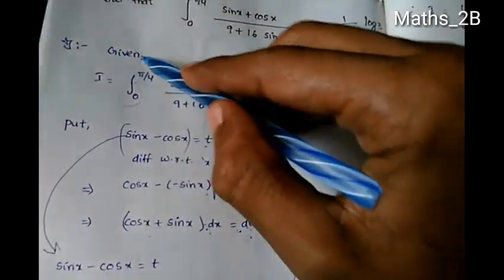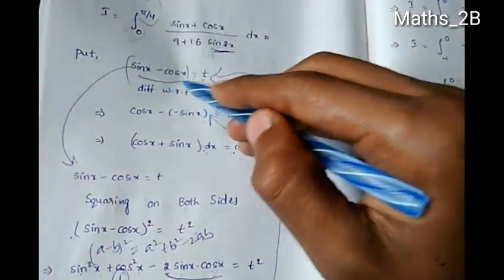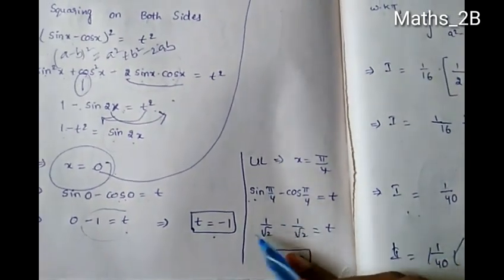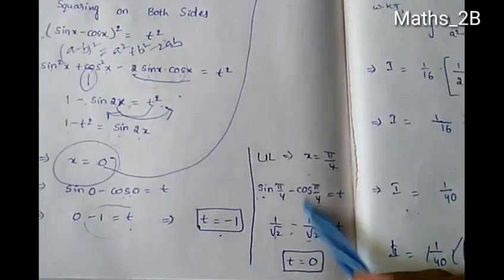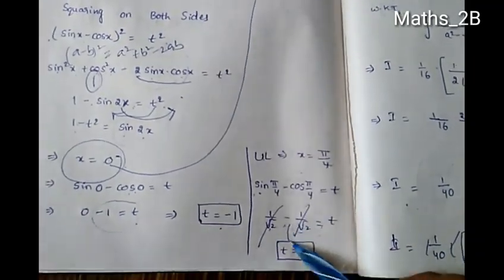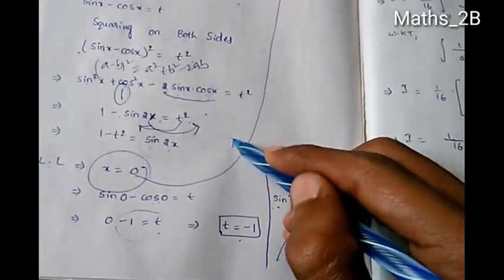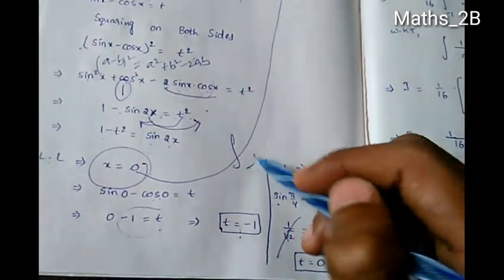For the upper limit, when x = π/4, sin(π/4) - cos(π/4) = 1/√2 - 1/√2 = 0, so t = 0. Therefore the limits change from -1 to 0.